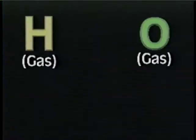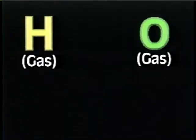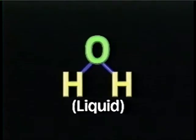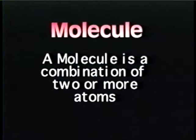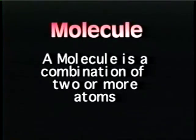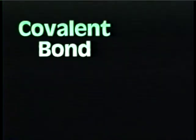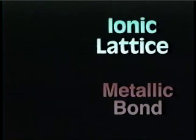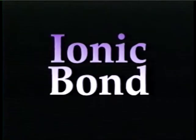Just as atoms with differing numbers of electrons or neutrons have different properties, when we combine atoms, their properties change. A combination of atoms is called a molecule. Molecules are formed when two or more atoms combine. There are several ways that atoms can combine or bond. We will look at just one of those types — the ionic bond.